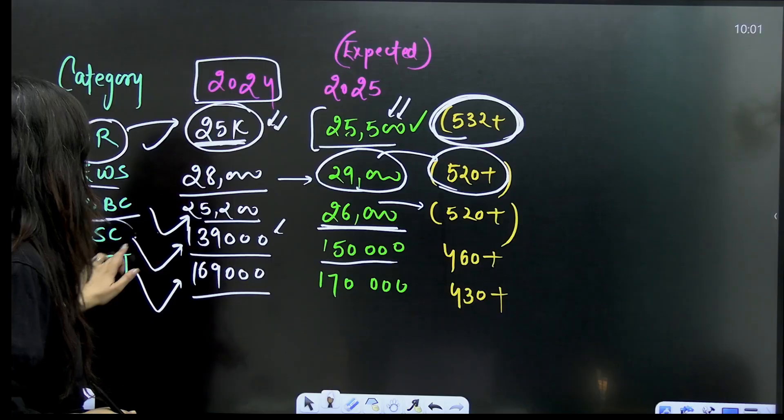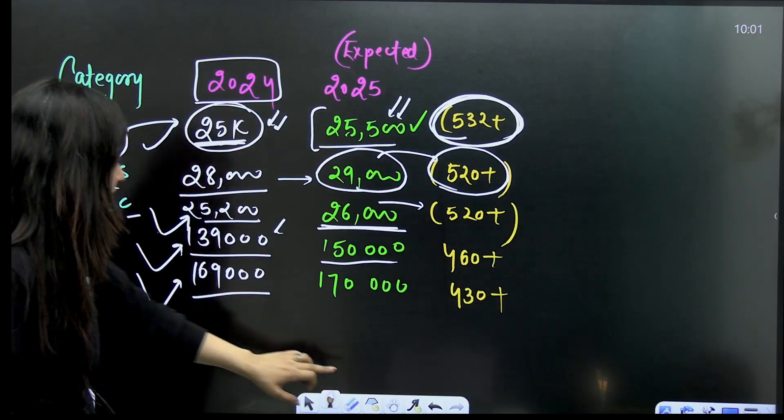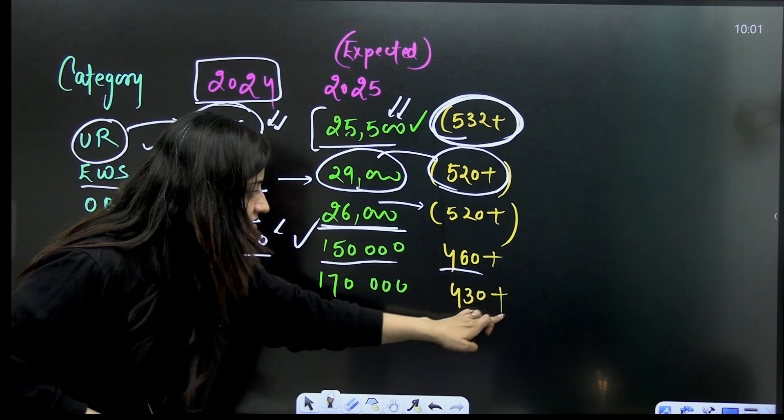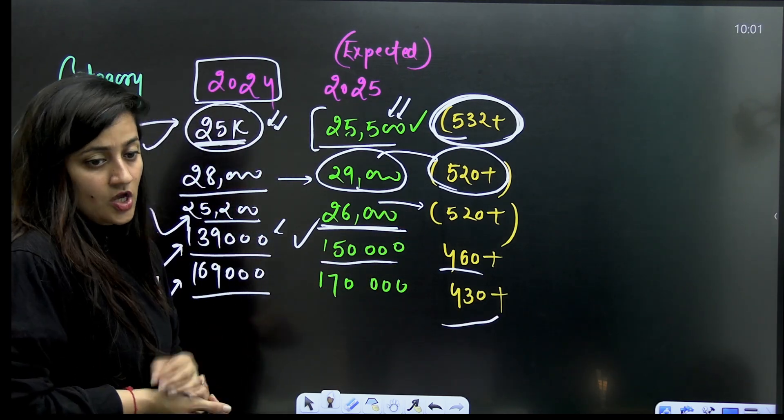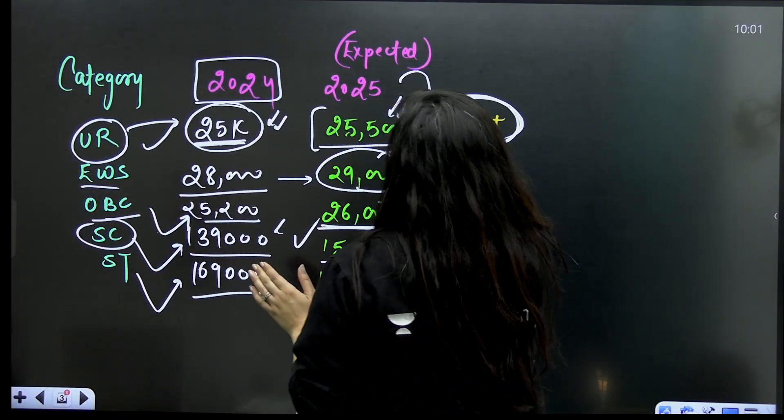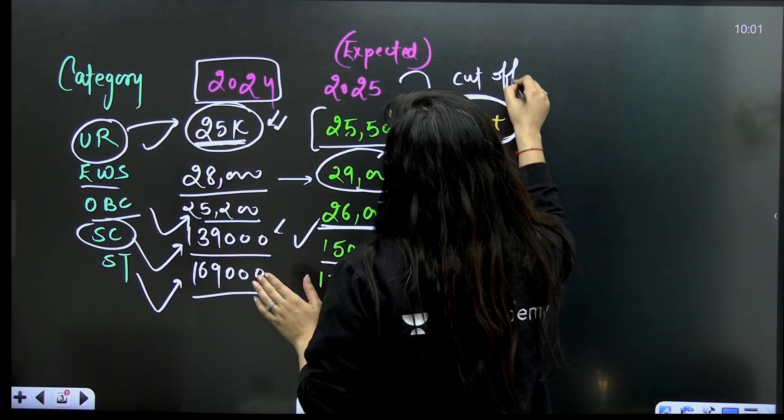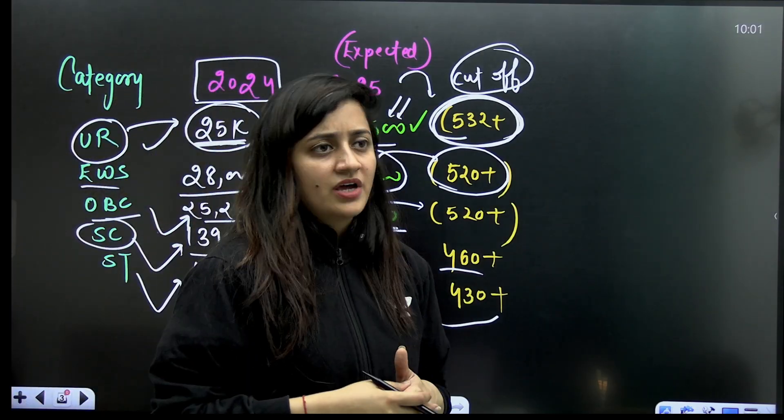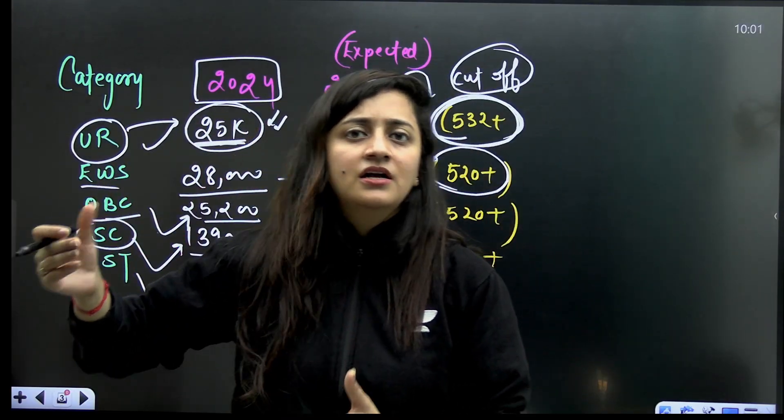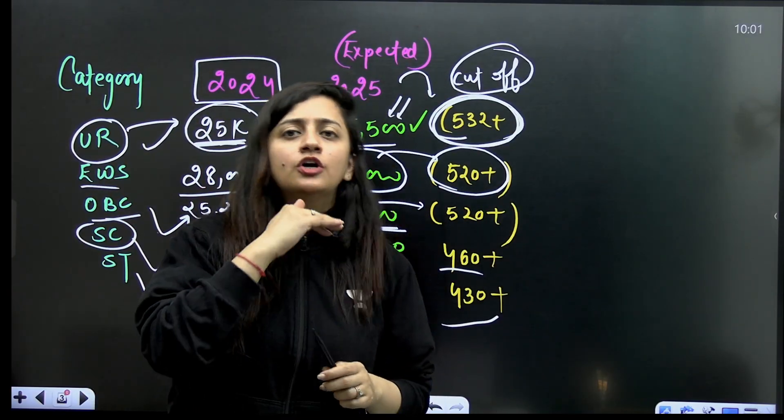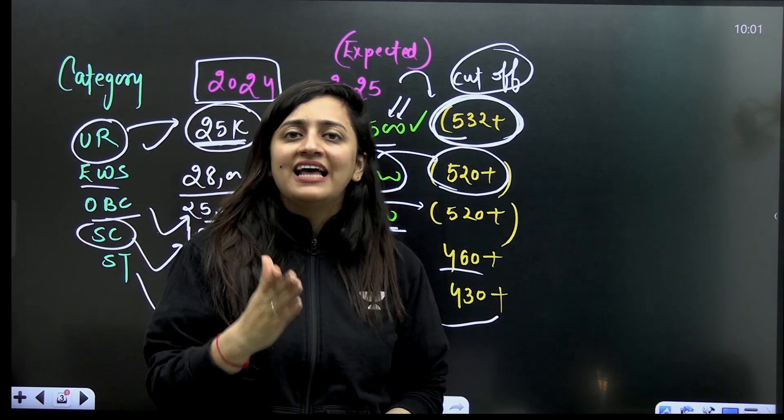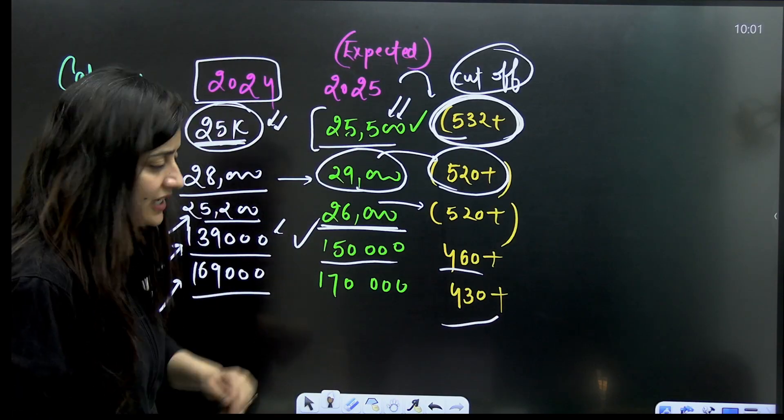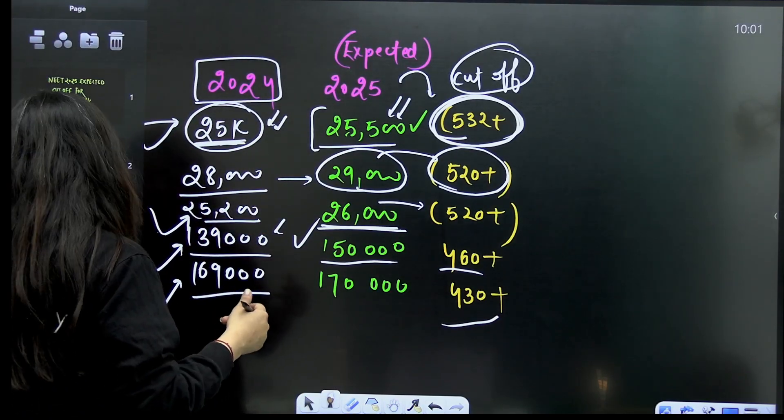For SC and ST, this will be 150,000, 170,000 and these are the marks you need. This is the expected cutoff for government medical college. Of course it varies state to state - there are some states where cutoff is high and some states it goes low. It depends upon your state as well, but whatever I'm telling you is as per All India quota.